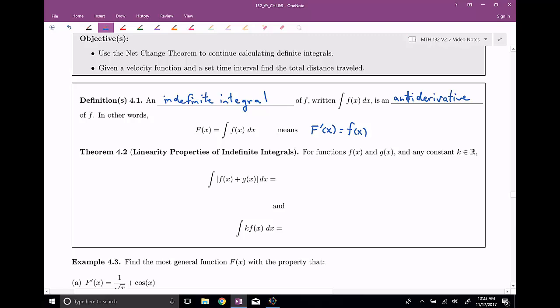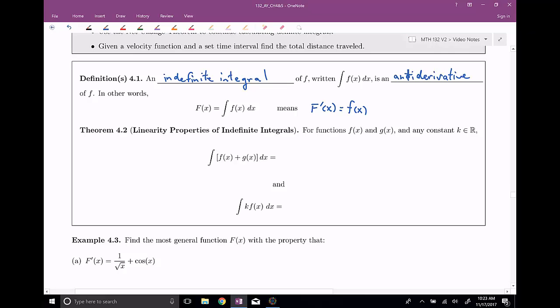And since indefinite integrals are anti-derivatives, sometimes they have a lot of the same properties. So for instance, if you want to find the anti-derivative of f plus g, that's the same thing as if you found the anti-derivative of f, then found the anti-derivative of g, and you added those results together. So to some extent, this is saying that we can distribute this integral symbol to kind of each piece.